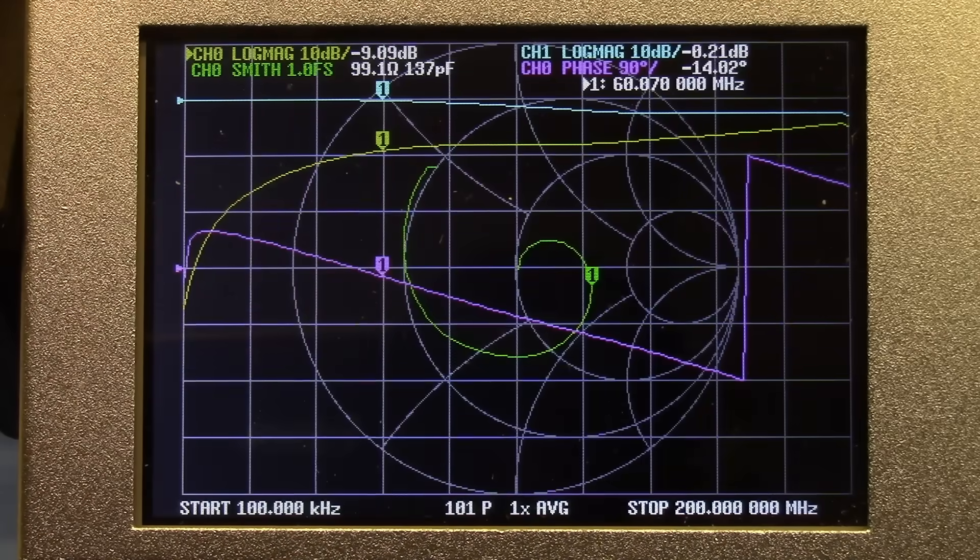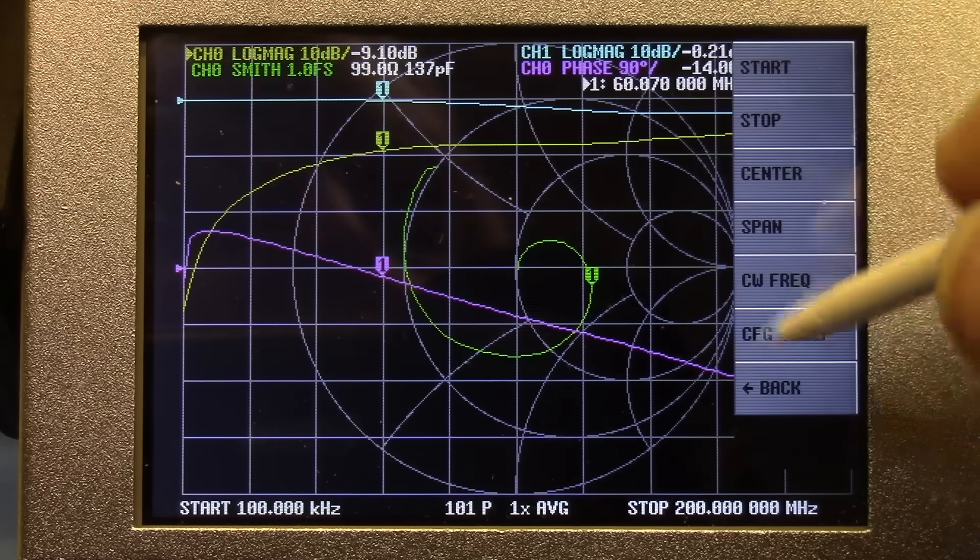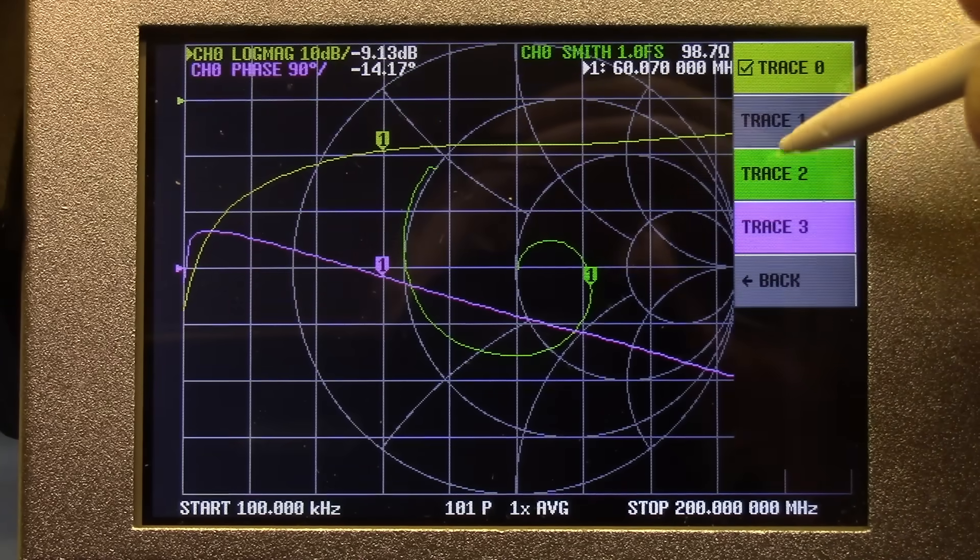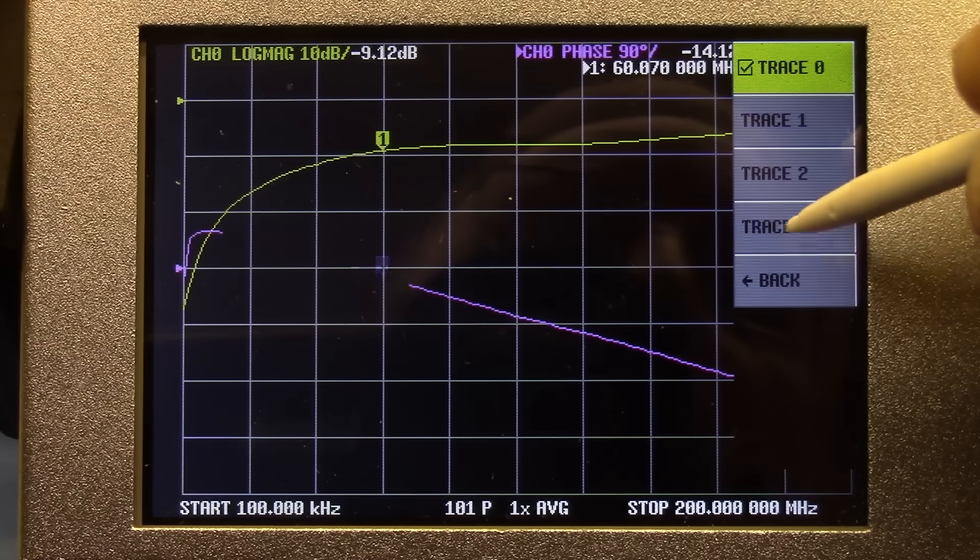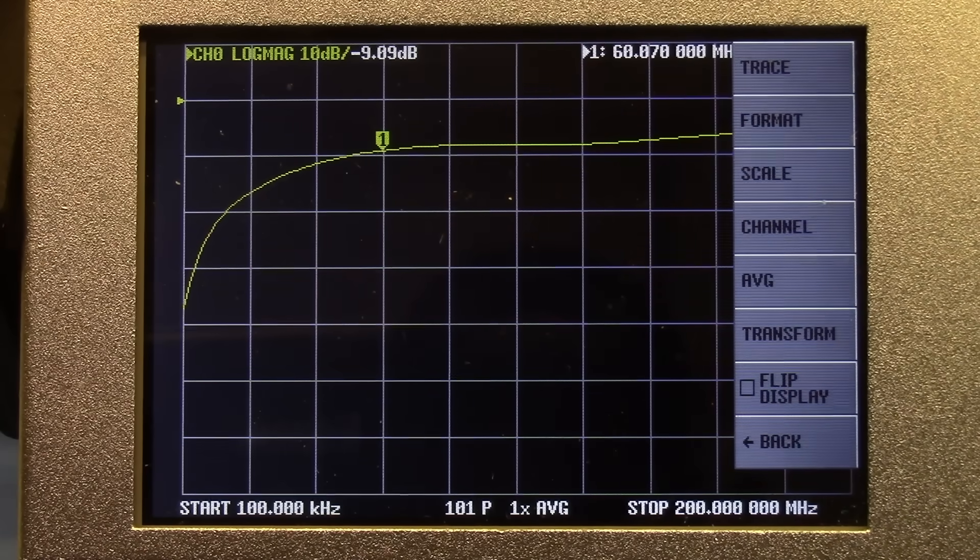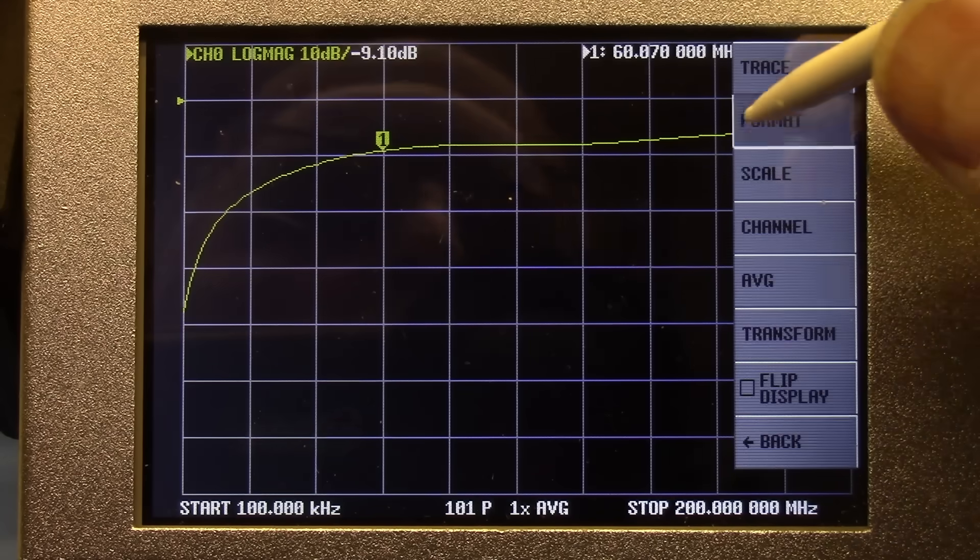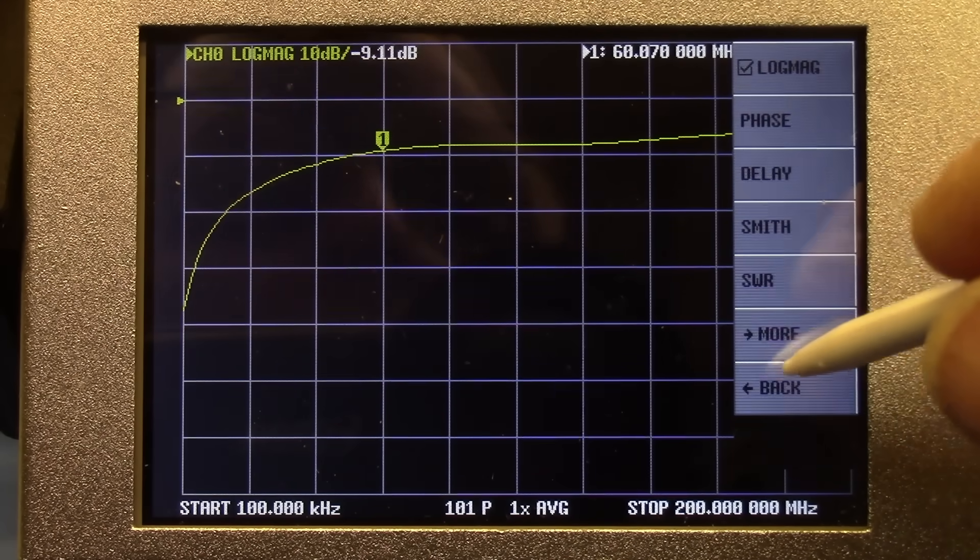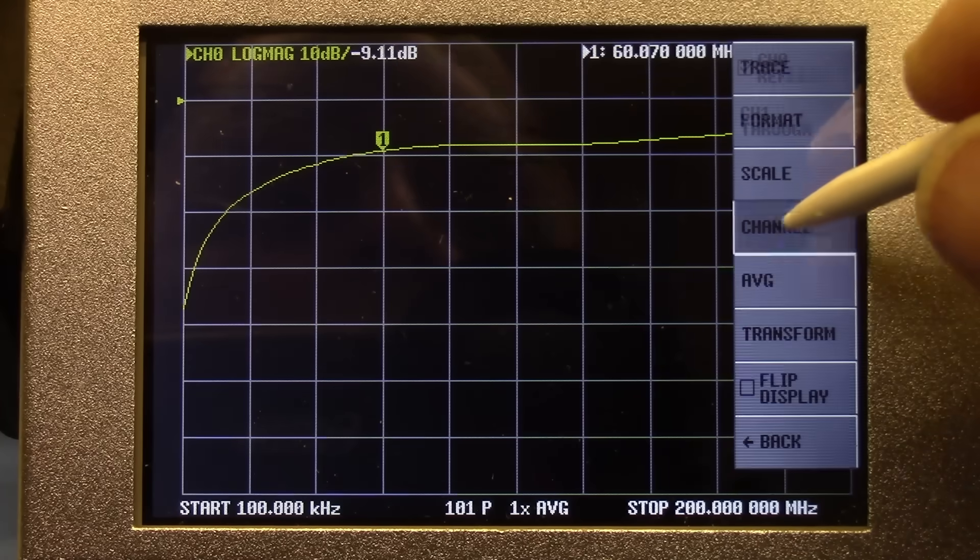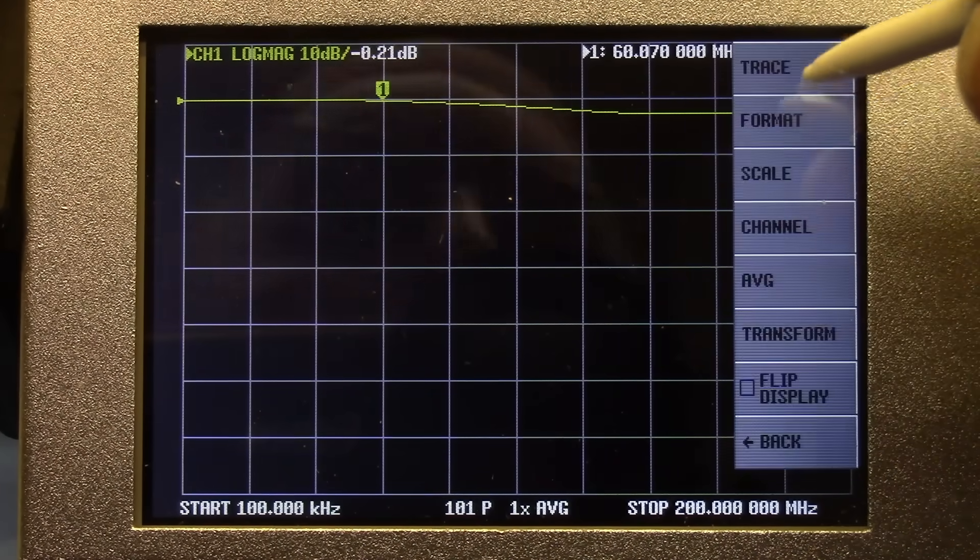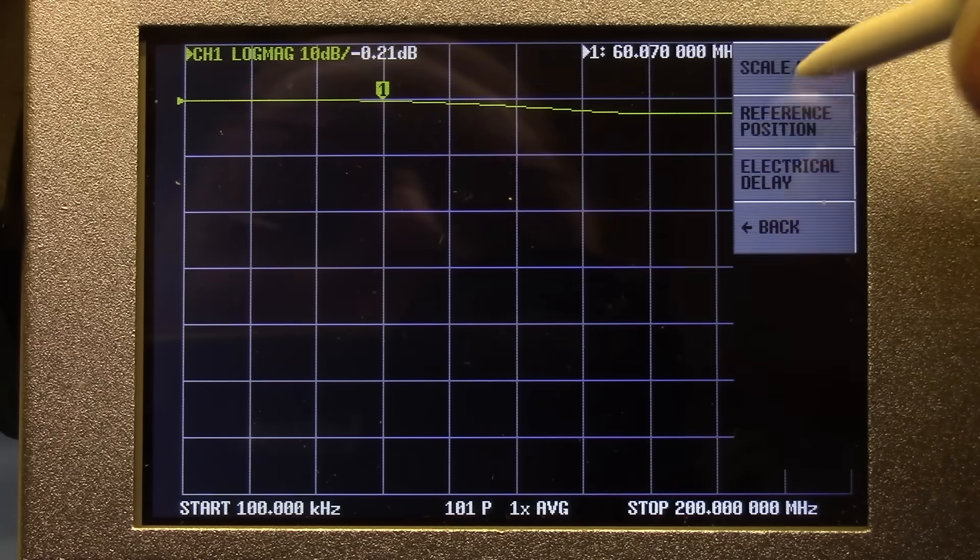There is no sense in cluttering the screen with stuff I don't need, so I'm going to turn off some of the traces. I will configure the one trace I have left to have a log format, and the channel to be channel 1 through. I'm going to also set the scale per division for 2 dB per division.